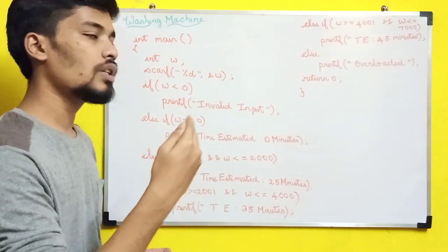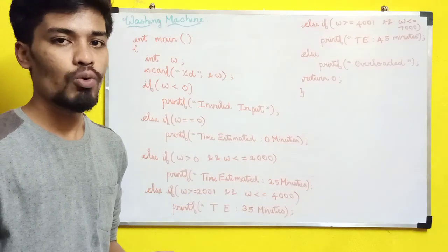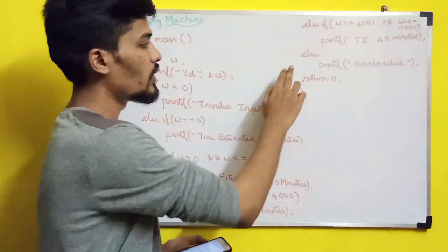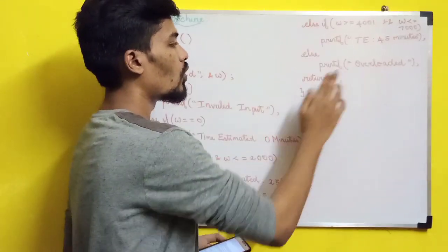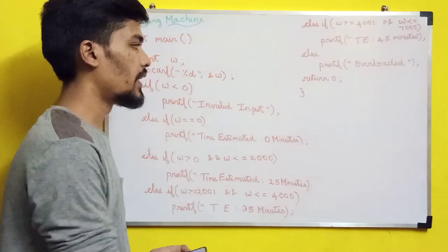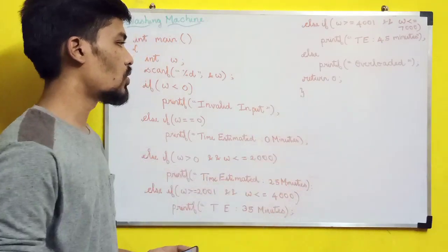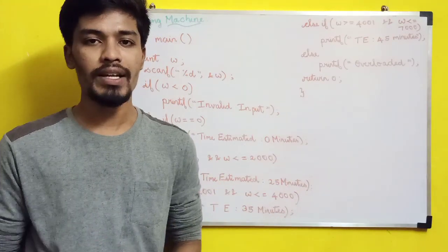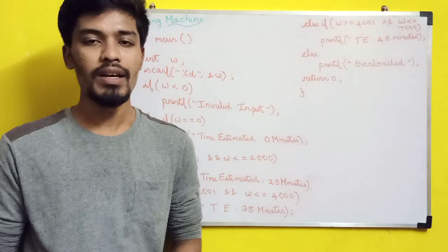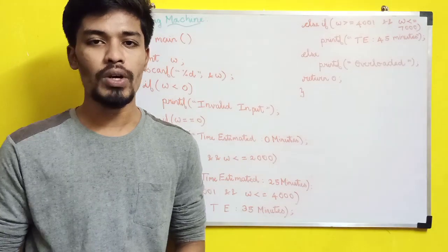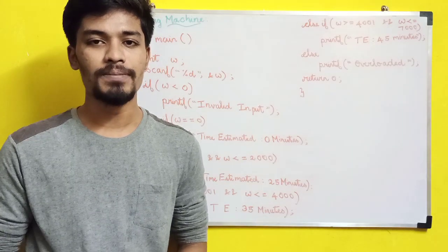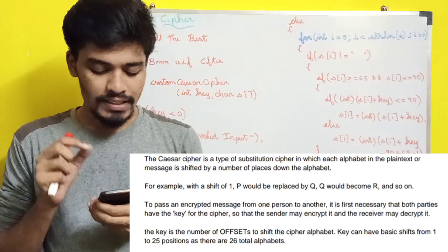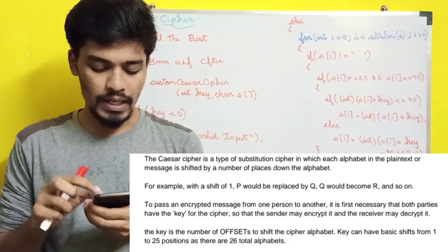So if w is greater than 7000, we print 'overloaded'. That covers the washing machine program. So the next question is Caesar Cipher.